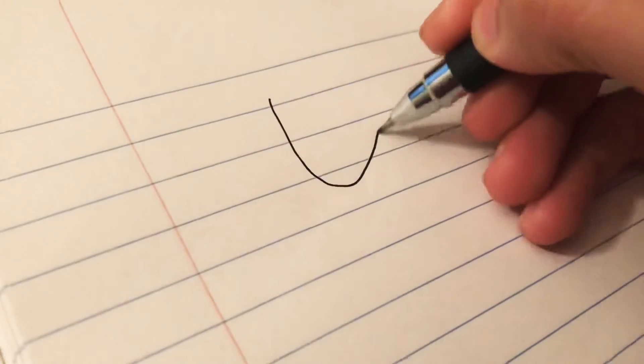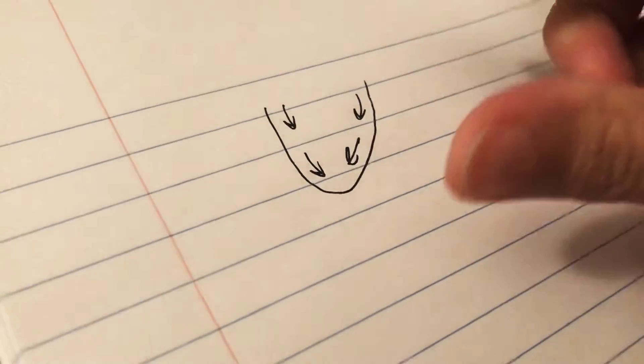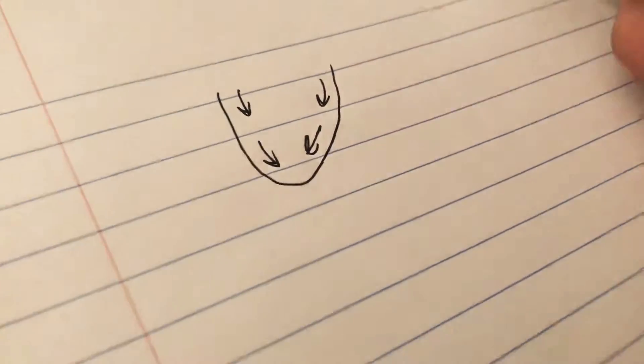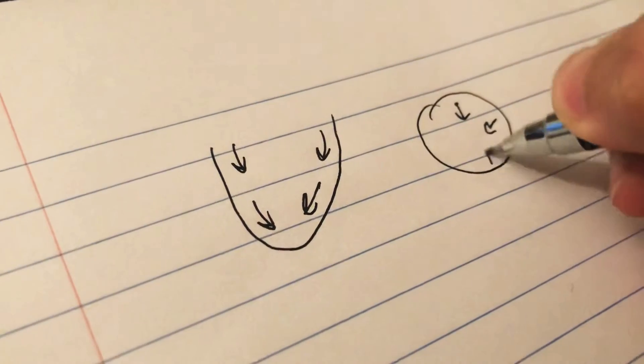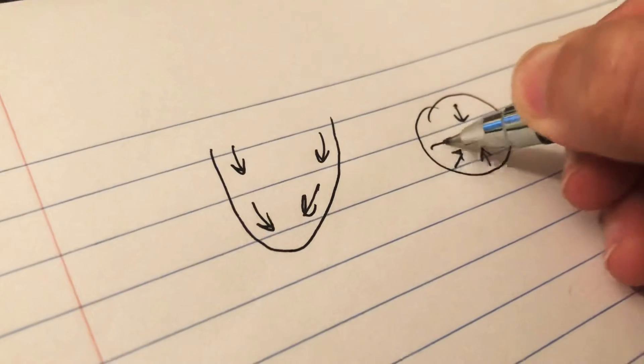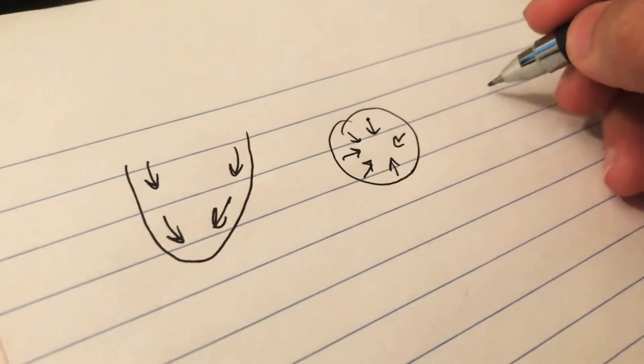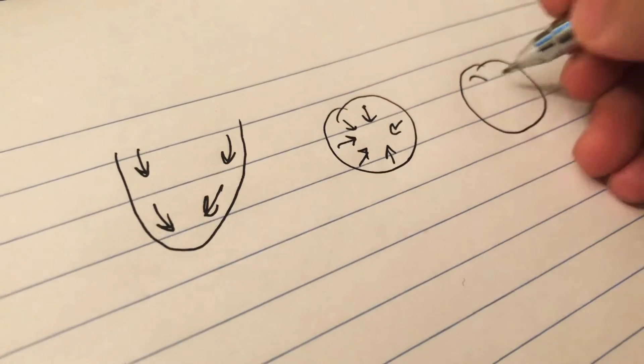So before I go into TAPSE, I just wanted to explain how the ventricle contracts. Say this is the ventricle. There is the longitudinal contraction of the ventricle where the fibers longitudinally contract, and then there is the radial contraction where the fibers radially contract. It's like a donut that is narrowing. And then the third motion is the circumferential motion.